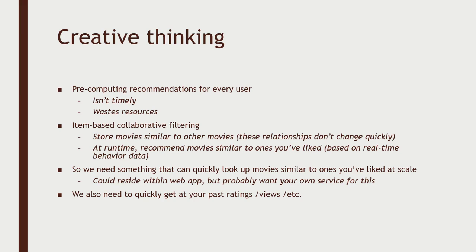The idea with item-based collaborative filtering is that the heavy lifting — the machine learning — is just on the relationships between movies. So based on past consumer behavior, people who liked Star Wars also liked The Empire Strikes Back and Indiana Jones. That data can be updated more infrequently because these relationships between movies do not change quickly. However, your behavior as an individual does change quickly. So the idea is to very quickly retrieve your past ratings, purchases, or views, get that up to the minute, and then refer to a separate database of similar movies to ones you've liked. Put together the list of similar movies, filter out the ones you've already seen, and those become your recommendations.